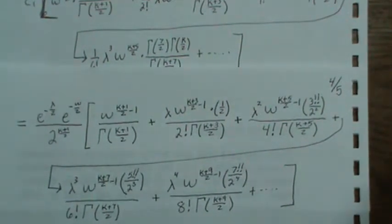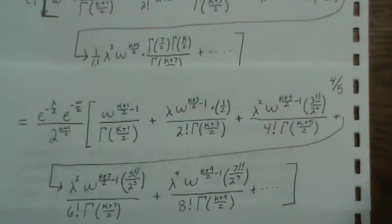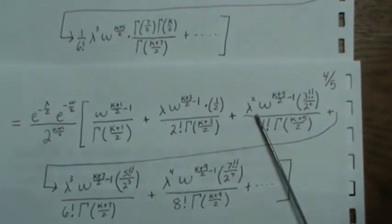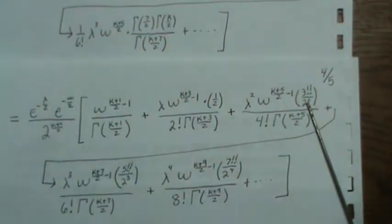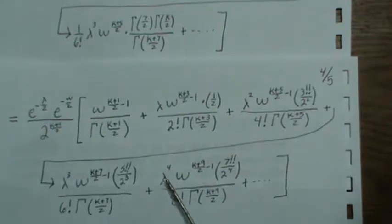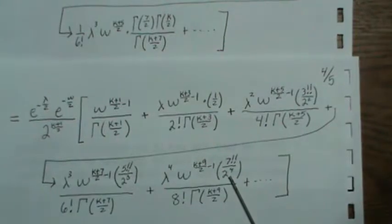Now we need to simplify this more. It would be nice if we could do something with the factorials and the double factorials. And one other note is that this denominator 2 to the squared all these 2's here are going to be written into this lambda. So it's going to be lambda over 2 all raised to the 4th power.